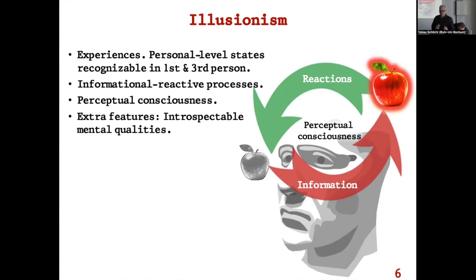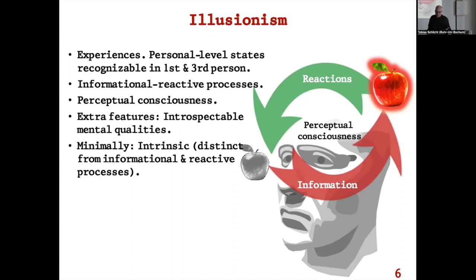The question is: is there something else happening? Are these processes producing introspectable mental qualities of some kind — the actual redness of the apple? Of course the apple in the world isn't really red; it's just got certain structural properties, surface textures affecting light. The brain kind of fills it in with redness. These phenomenal properties — the minimal commitment to a phenomenal realist view — are intrinsic in some sense, distinct from the information and reactive processes.